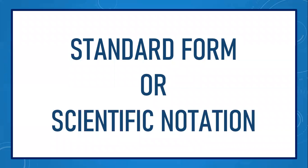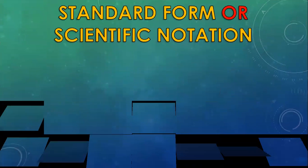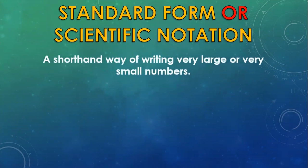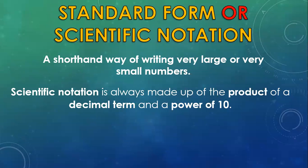Today, we will be looking at standard form or scientific notation. Standard form or scientific notation is just another way of rewriting very large or very small quantities in a simplified format. Please note, scientific notation is always made up of the product of a decimal number and a power of 10.